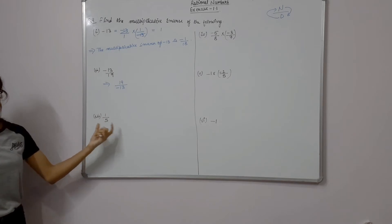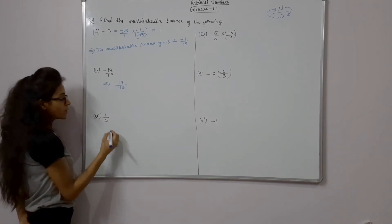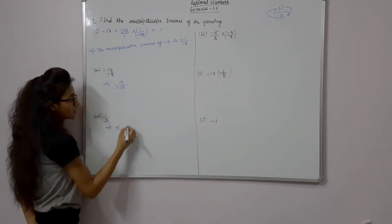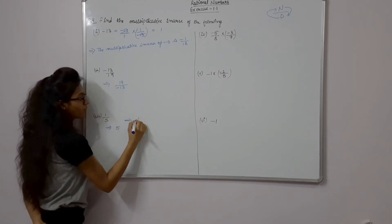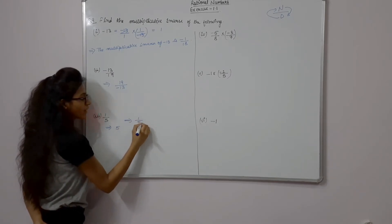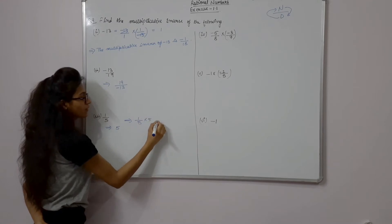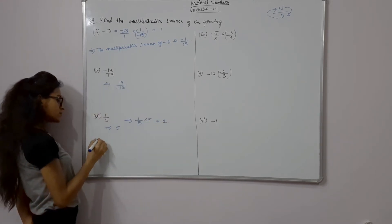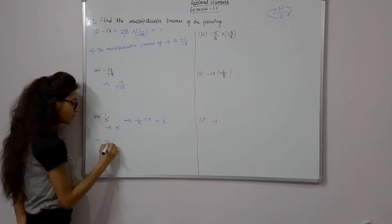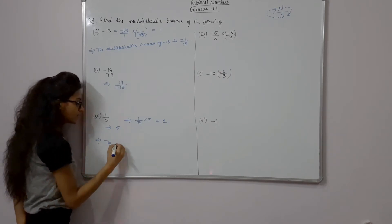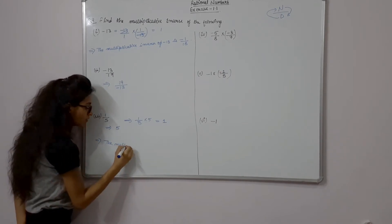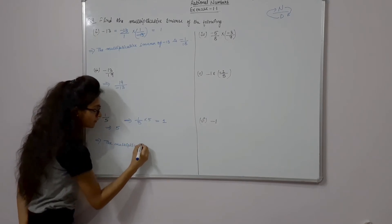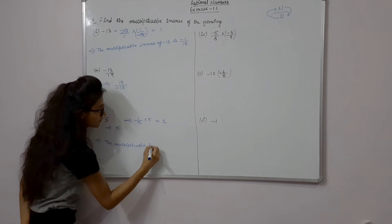Now third part is 1 upon 5. Its multiplicative inverse will be only 5. How? 1 upon 5 multiplied by 5 gives answer 1. And a concluding line: the multiplicative inverse of 1 upon 5 is 5.